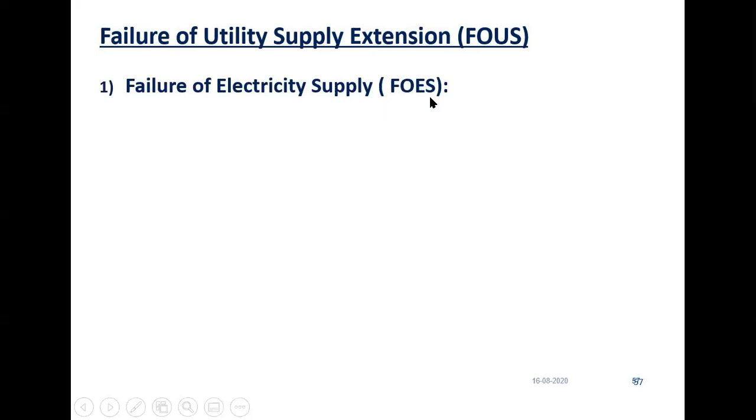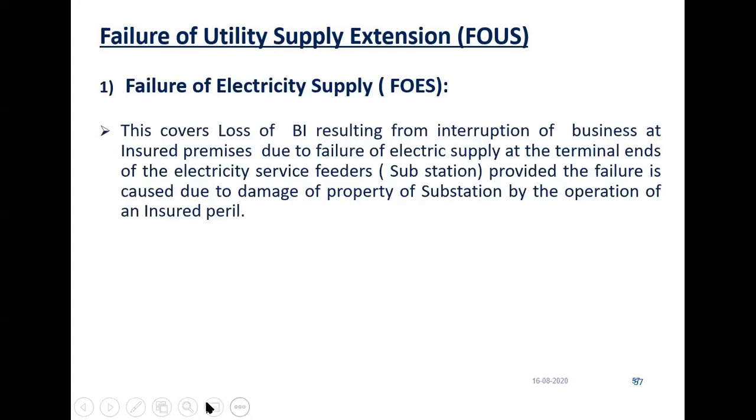The third extension is Failure of Utility Supply — we call it FOUS. The loss can also take place due to failure of utility supply. There are three utilities covered under the policy: failure of electricity supply (FOES), failure of gas supply (FOGS), and failure of water supply (FOWS). Let us see them one by one.